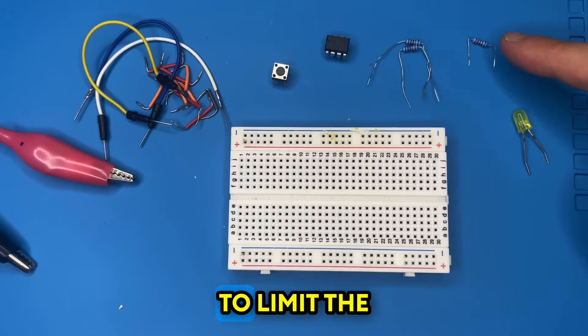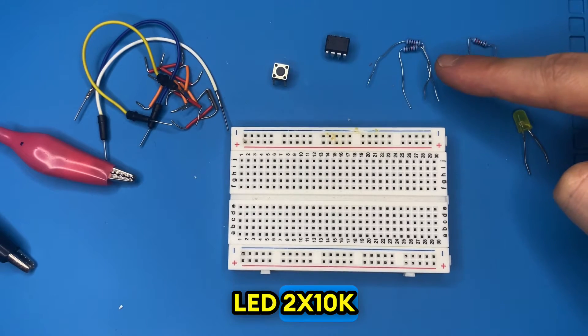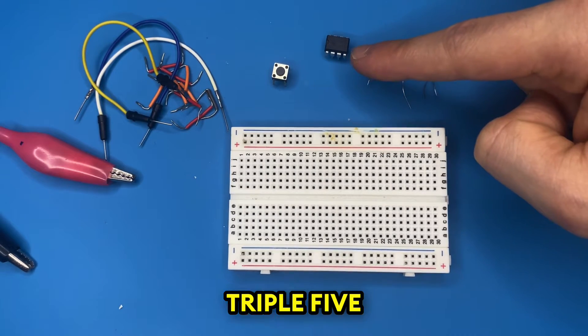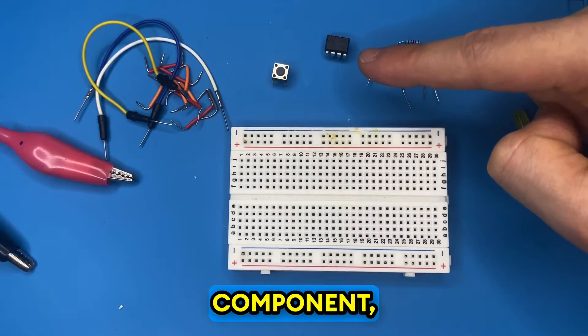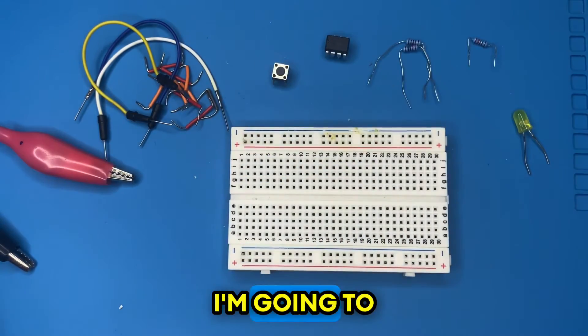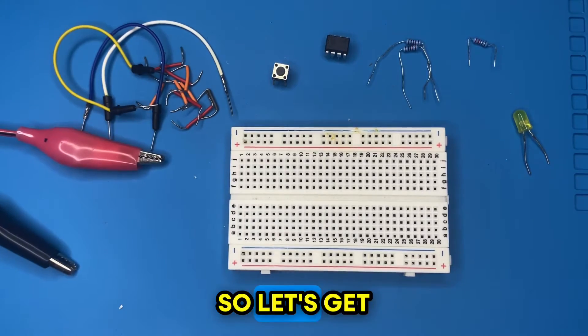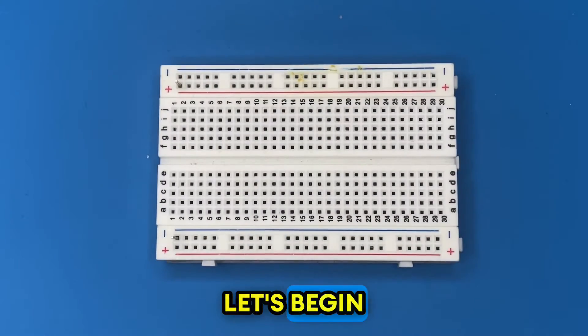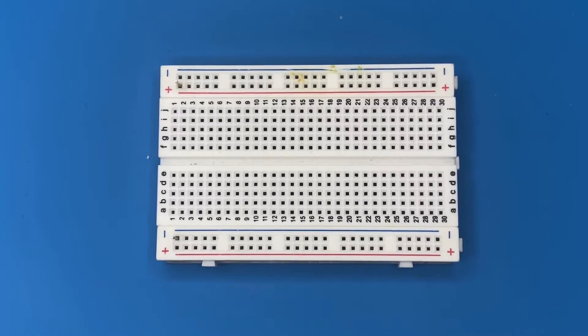The resistor will limit the current across the LED. I also need two 10 kilo ohm resistors, the 555 timer IC as our main component, a push button switch, some jumper wires, and I'm going to power the circuit with 9 volts. So let's get started. Let's begin the project by inserting the 555 timer IC to breadboard.